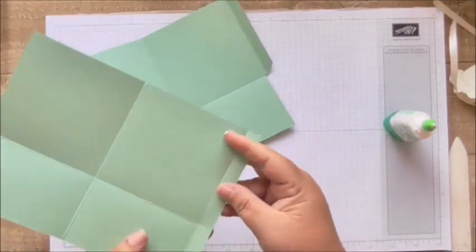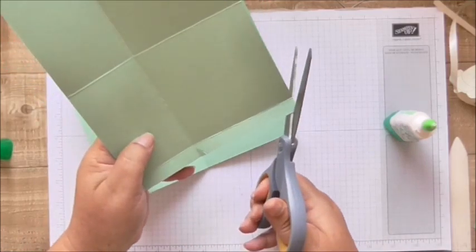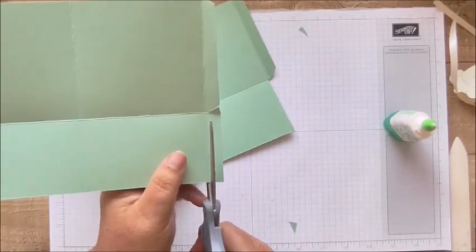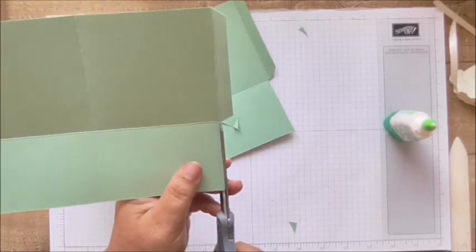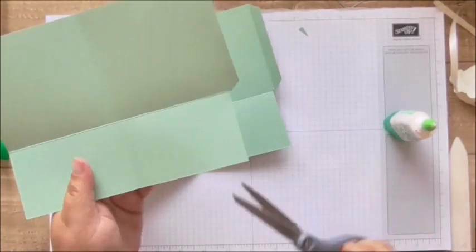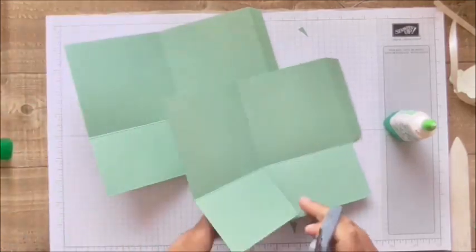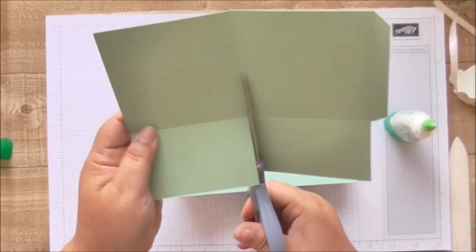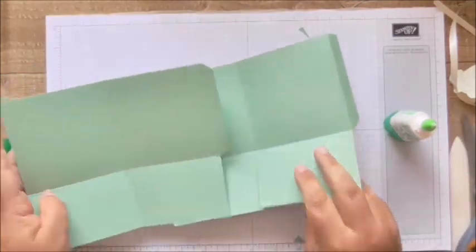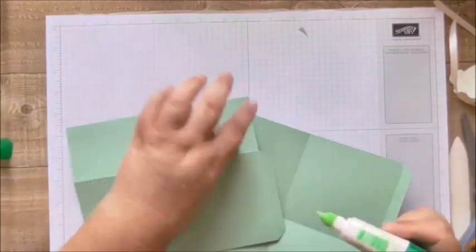So you can notch this in, notch that in, and just trim that off. And do the same with the other piece. Notch that in, keep your longer piece and get rid of your shorter piece. And then cut up your two score lines in the middle.